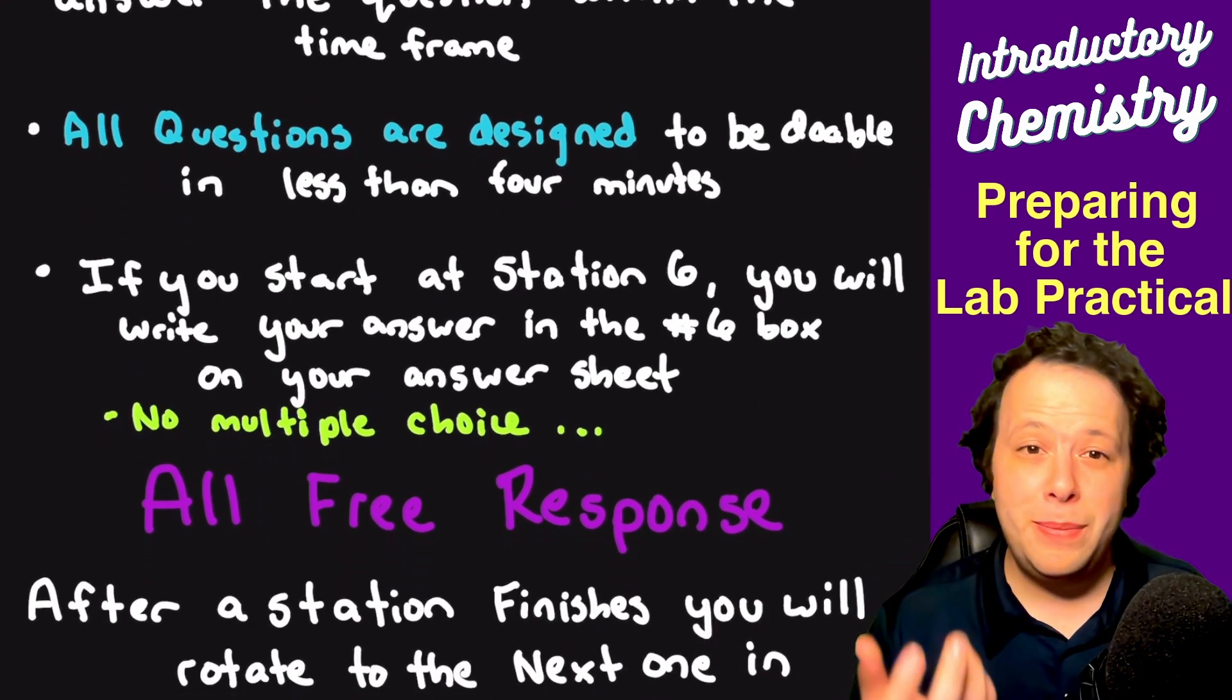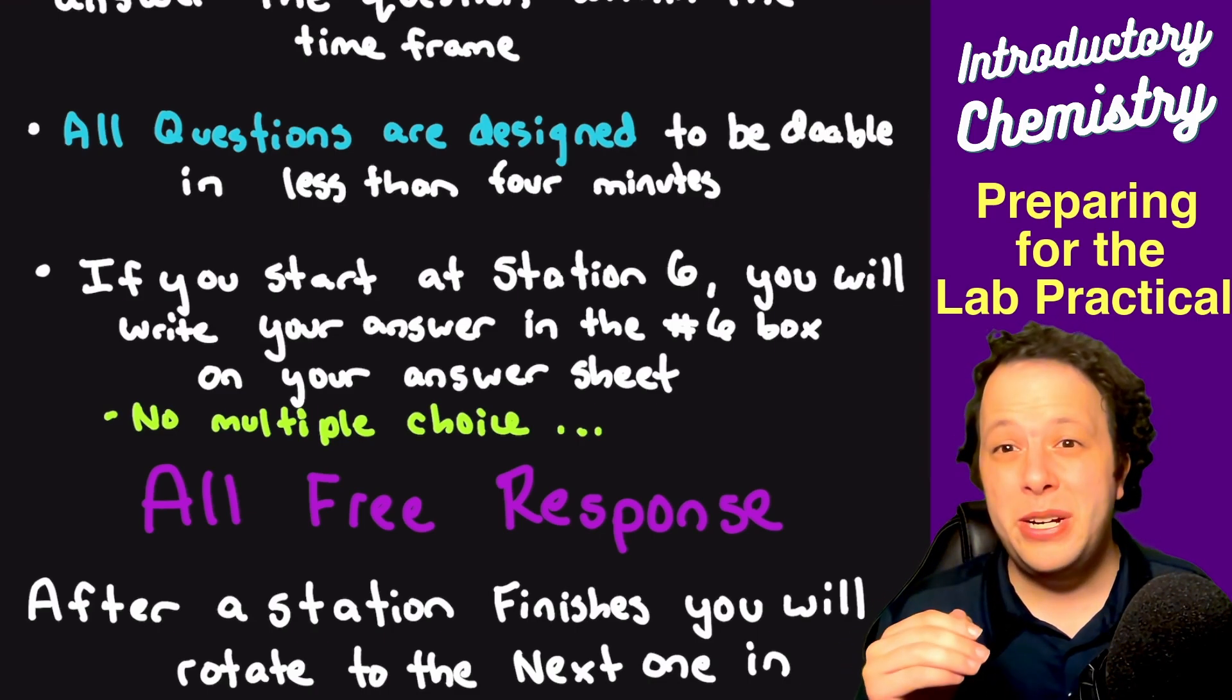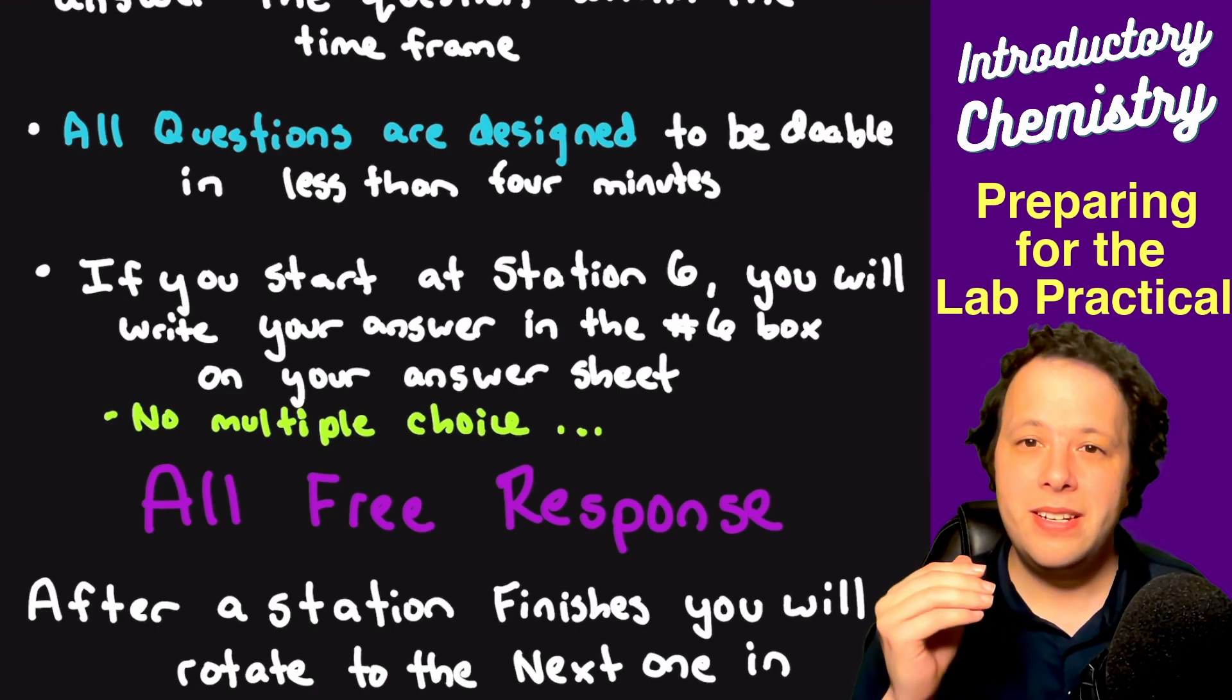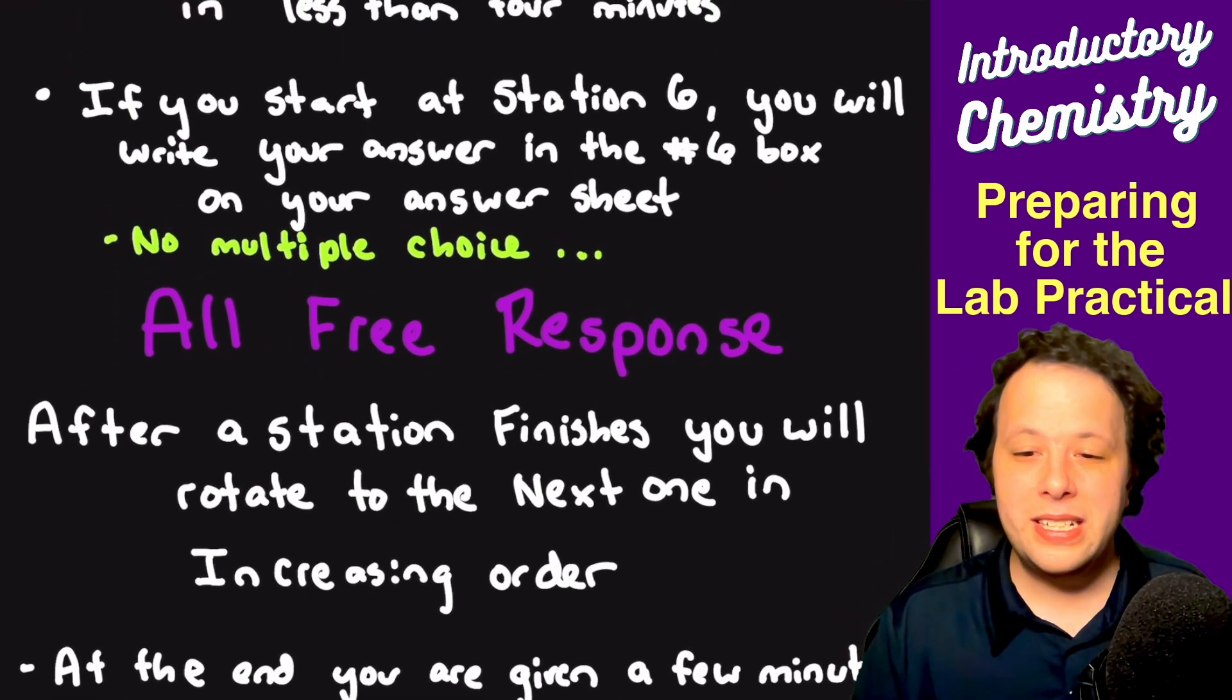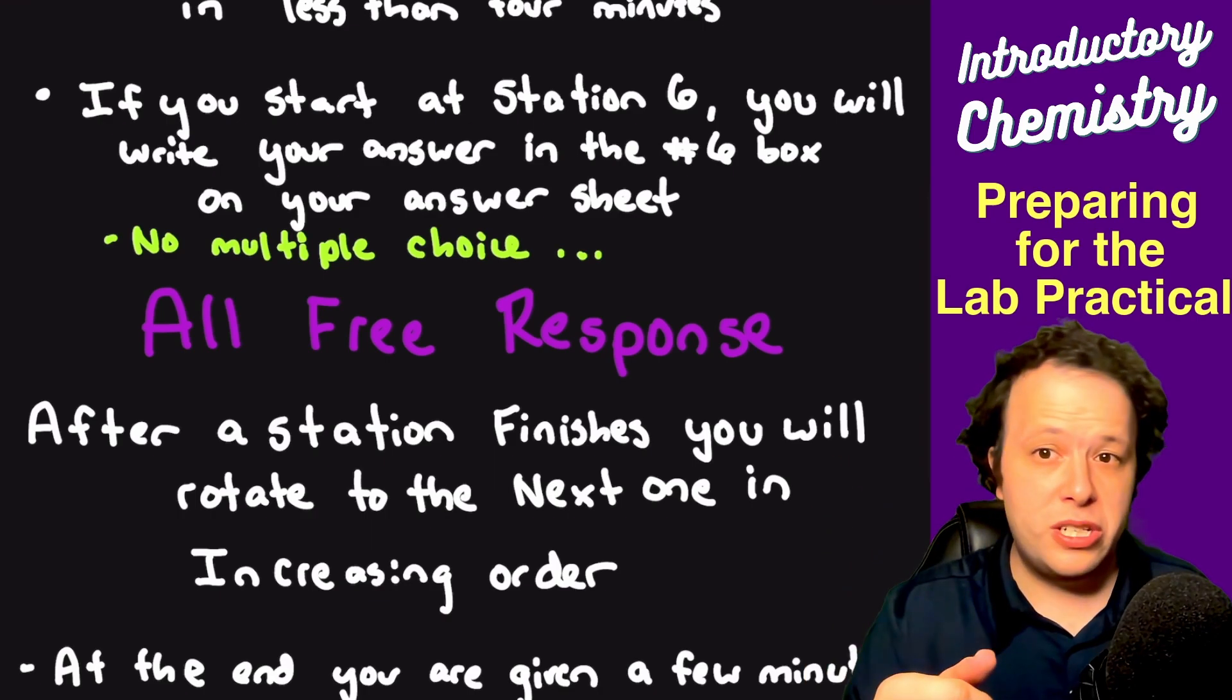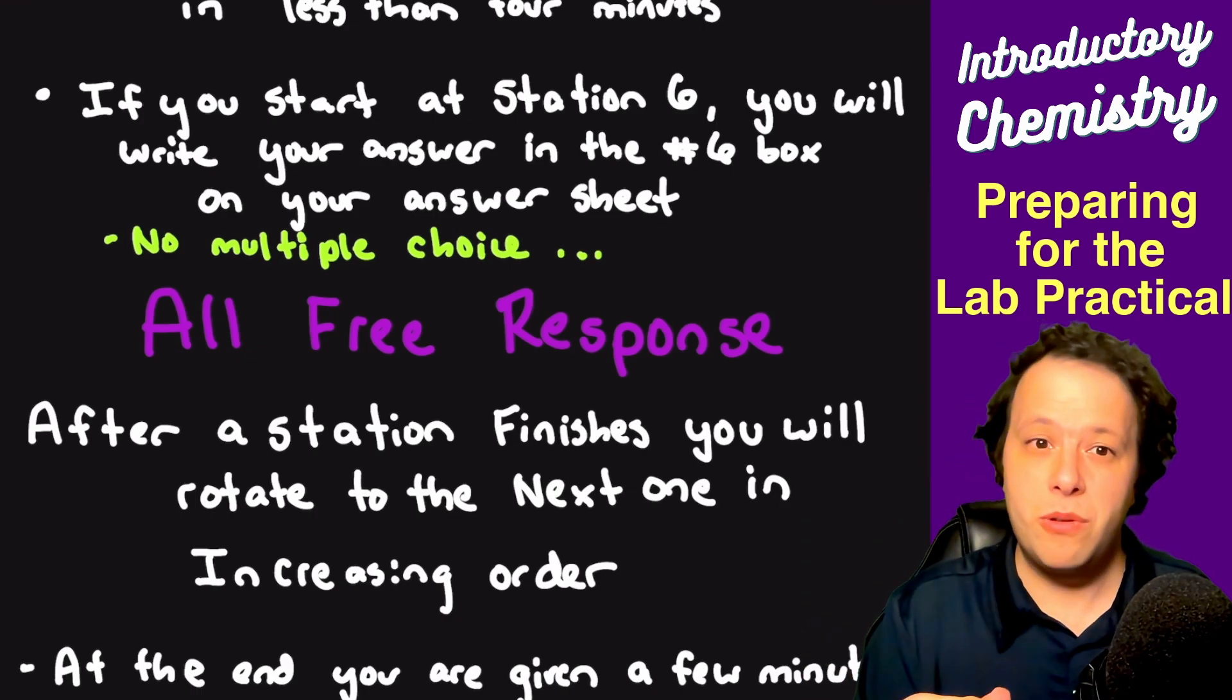Keep in mind none of these are multiple choice. They're things you should have mastered or understood by this point. All of it is free response questions—calculations, maybe balancing, maybe measuring something. They're all things you've been working on throughout the semester. When the timer goes up, you'll rotate to the next station. They're always in increasing order. If you start at six, you rotate to seven. You're always following the same person, so if I'm at six, I'm going to follow the student at number seven the entire way through.